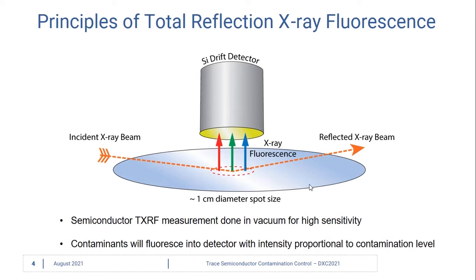The wafer moves on a stage underneath the detector, and this is how we're able to map the entire wafer surface and define our incident angle. Something different with the semiconductor TXRF versus the benchtop models is the measurement is also done in vacuum.